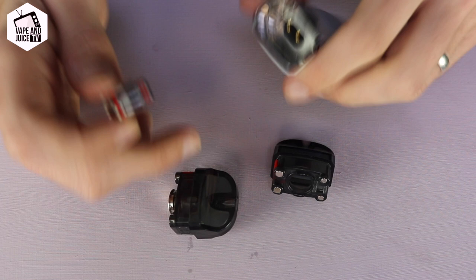But anyway, so how do we change a coil? Well it's very straightforward. Obviously you take the tank and take the capsule out of the top and you've got your pod.